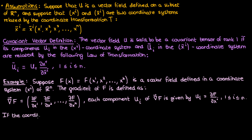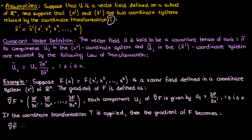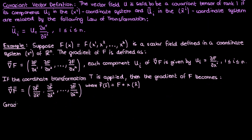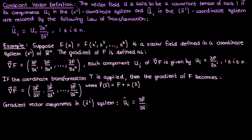Now, what if we change the coordinates from xi to xi bar using this coordinate transformation t? Well, in that case, the gradient of the scalar field f would change to include partial derivatives with respect to the barred coordinates. Note that f bar is the same as f, just written in terms of the barred coordinates — it's a composition of f and the unbarred coordinates in terms of the barred coordinates. The components of the gradient vector for f in this transformed coordinate system are now u sub i bar equals partial f bar with respect to xi bar.